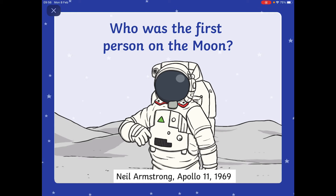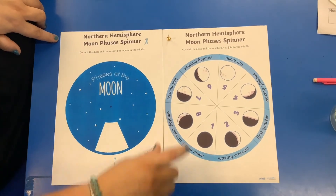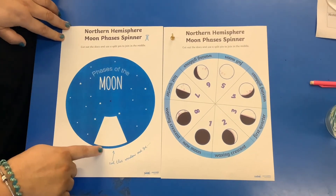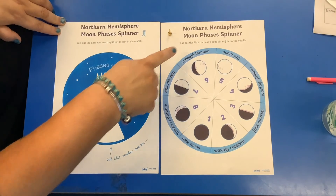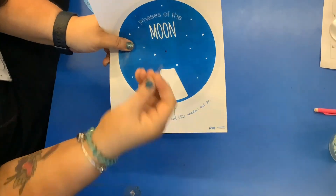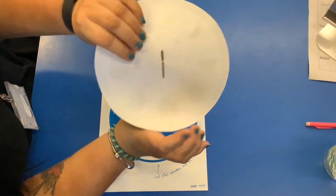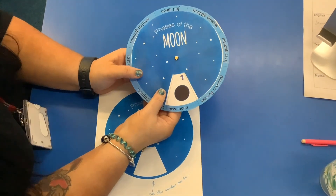Following this, there's something in your pack for you to complete — it's the Northern Hemisphere Moon Phases Spinner. In your pack you should have two pieces of paper and a split pin. You need to cut round the big circle on the first sheet and cut out the white window. Then cut out the circle on the second sheet, place the blue circle over that circle, make a hole in the middle with the split pin, and put it together just like this. Here's one that has been prepared earlier — push the split pin through just so it's safe and not going to dig into anyone.